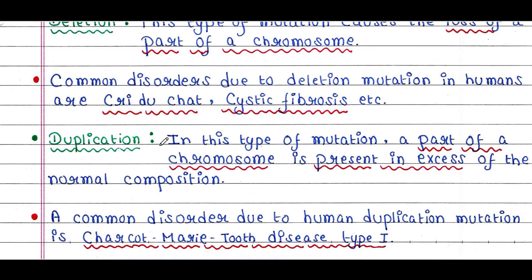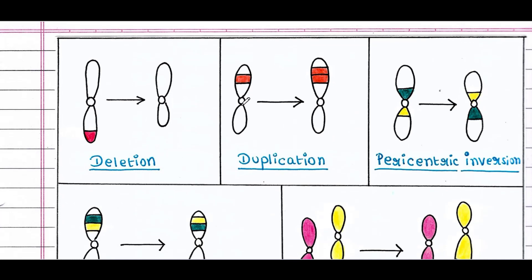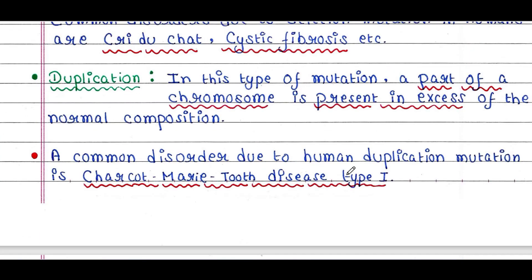Next is duplication. In this type of mutation, a part of a chromosome is present in excess of normal composition. As seen in the figure, the normal chromosome has a segment that gets duplicated, and the new chromosome contains two copies of that segment. A common disorder due to duplication mutation is Charcot-Marie-Tooth disease type 1.